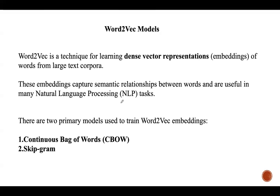In this lecture, let us discuss about Word2Vec model, which is a powerful and widely used technique for creating dense word representations for word embeddings. It captures semantic relationships between words based on their context in a large corpus of text, and mainly transforms words into vectors that can be used in machine learning models to perform tasks such as sentiment analysis, text classification, language modeling, etc.